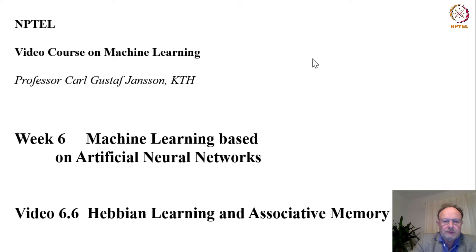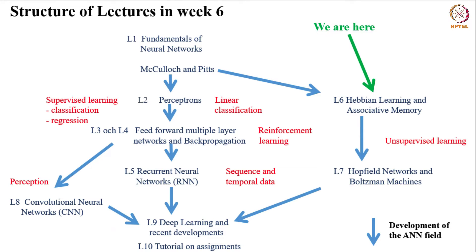Welcome to lecture six of the six-week course in machine learning. The theme of this lecture is Hebbian learning and associative memory. As you can see from the map of the lectures this week, we have now left the mainstream of work on artificial neural networks — the feed-forward networks and recurrent neural networks — and turned to another category of systems which can best be characterized by the term associative memory.